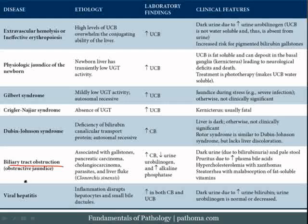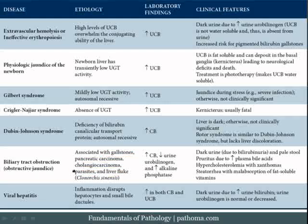Another cause of jaundice is biliary tract obstruction, also known as obstructive jaundice. You block the biliary tract, and whatever is in the bile leaks into the blood — including conjugated bilirubin, bile acids, bile salts, and cholesterol. Causes include gallstones, pancreatic carcinoma, cholangiocarcinoma, parasites, and liver flukes. Bile acids and salts depositing in the skin create pruritus, while cholesterol leaking into the blood gives hypercholesterolemia and xanthomas.